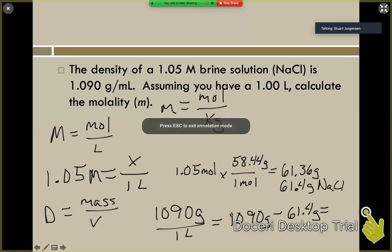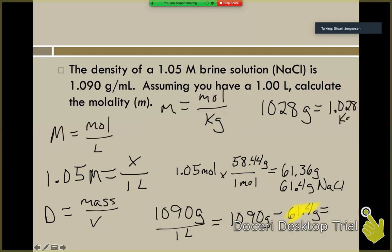Remember that this total mass here, this total mass of the solution based on the density is the salt plus the water. Here's the mass just from the salt. So if we subtract those, we can get mass of just the water. So when we subtract those, I'm going to sneak it up here in this empty space. That means we got a mass of 1,028 grams of water, which would be equal to 1.028 kilograms.